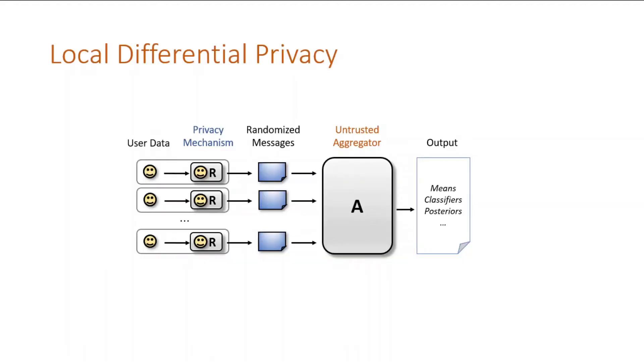In local differential privacy, users take it upon themselves to ensure their privacy. They compute randomized messages using their data and send these messages to an aggregator. The aggregator recovers the mean or classifier or some other information from the messages.